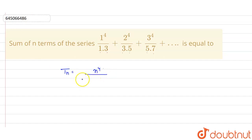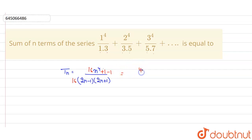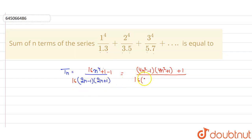Now I am multiplying and dividing by 16, and adding and subtracting 1. This will form 16n⁴ − 1 as (4n² − 1)(4n² + 1), plus 1 in the numerator, and 16(2n + 1)(2n − 1) in the denominator. We can also write (2n + 1)(2n − 1) as 4n² − 1, which is the a − b times a + b form.